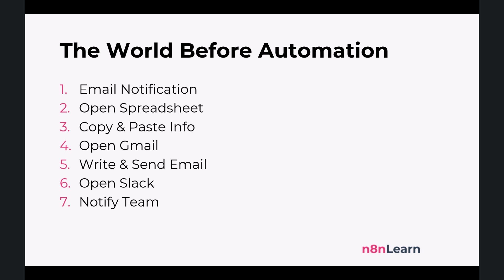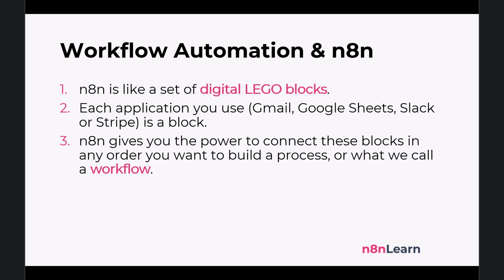This is the problem that workflow automation solves. Automation is simply the practice of teaching software to perform these multi-step repetitive tasks for you, and n8n is a tool that allows you to do exactly that. The best way to think of n8n is like a set of digital Lego blocks. Each application you use — Gmail, Google Sheets, Slack, or Stripe — is a block. n8n gives you the power to connect these blocks in any order you want to build a process, or what we call a workflow.